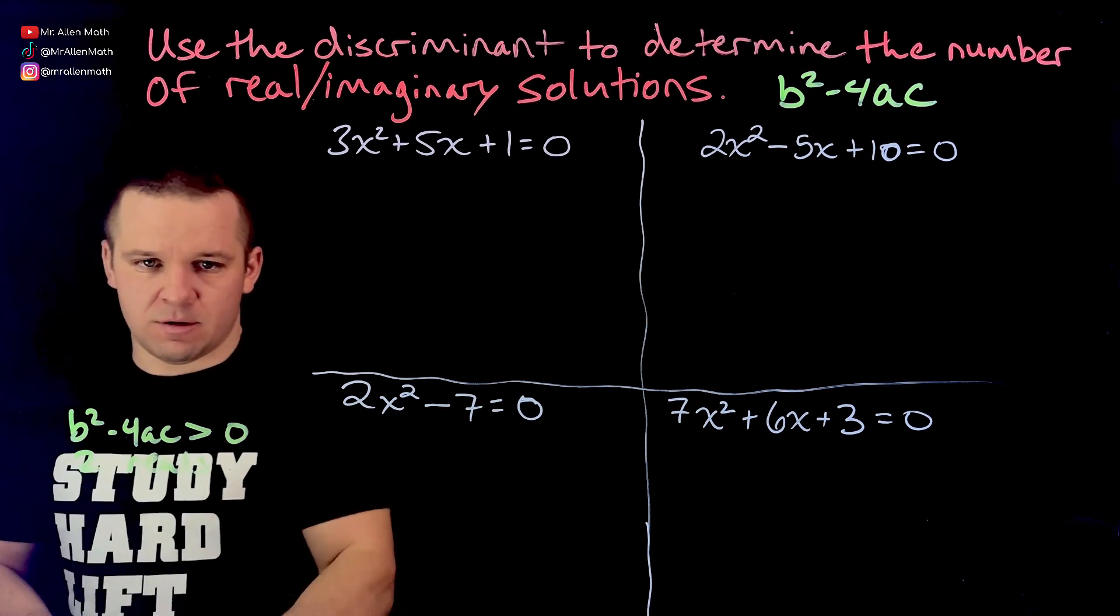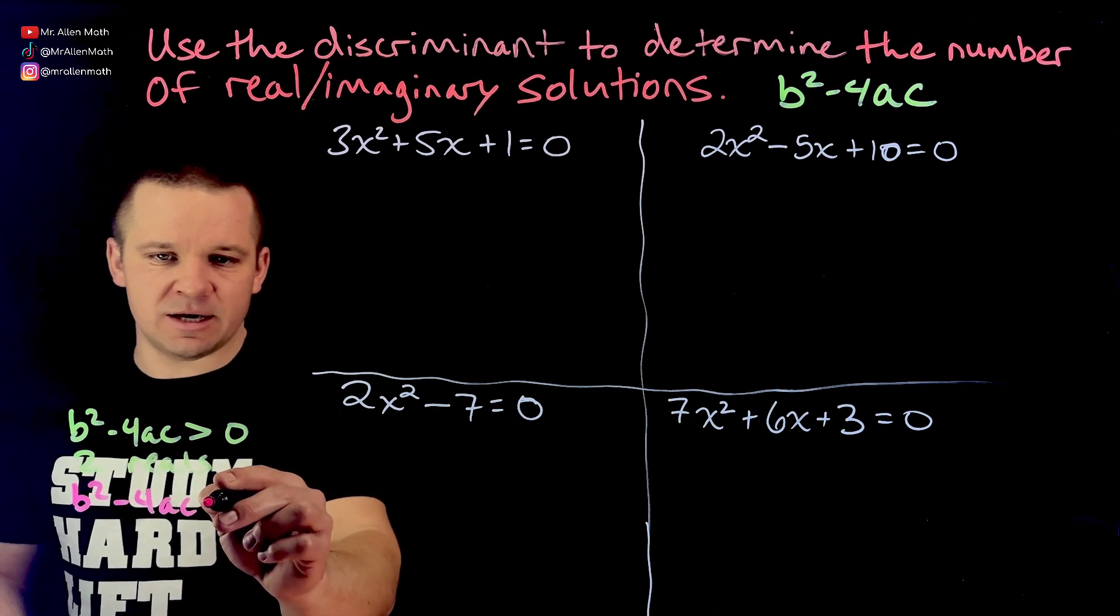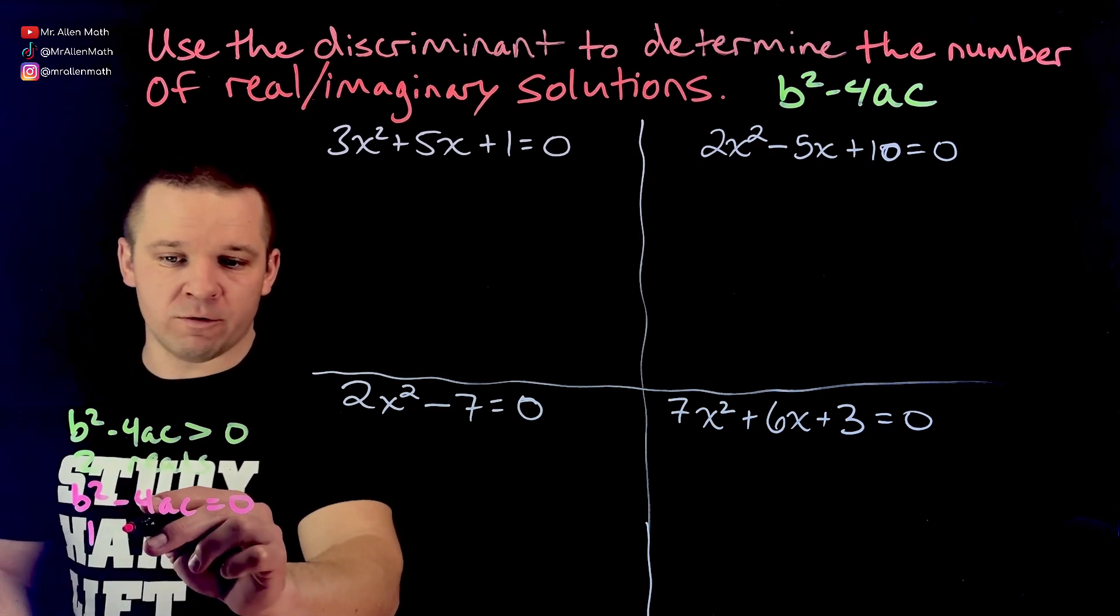And then if B squared minus 4AC is equal to zero, we get one real.